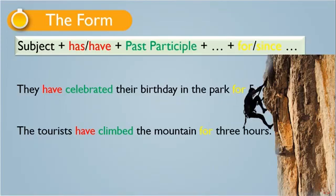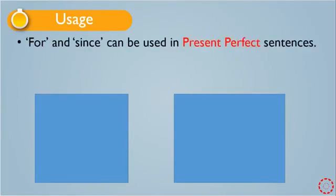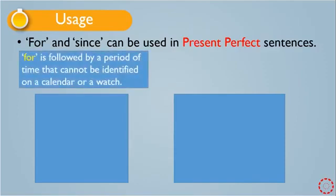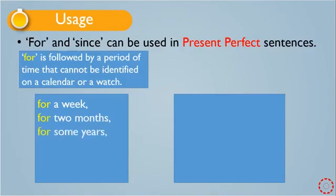Now you will learn when we use 'for' and when we use 'since'. Both can be used in present perfect sentences. 'For' is followed by a period of time that cannot be identified on a calendar or a watch — like: for a week, for two months, for some years, for ages, for an hour, for eight hours.